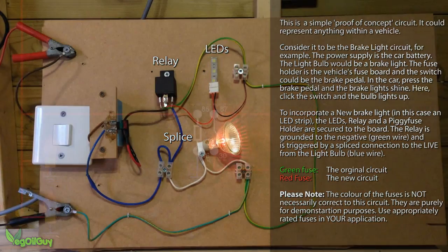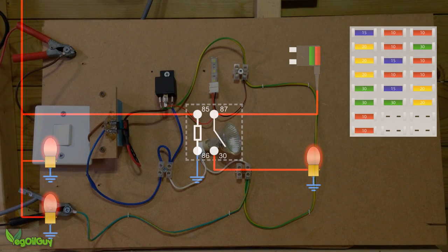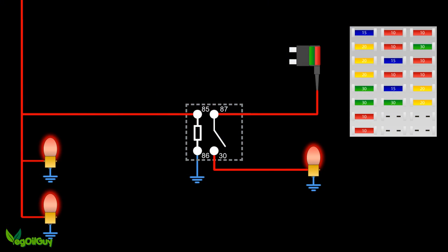So there we have it. An independent circuit operating through a relay and yet energised by the original parent circuit. It's as easy as that.